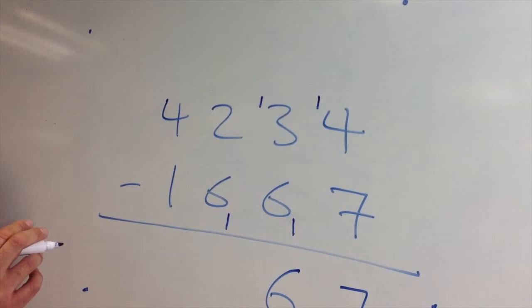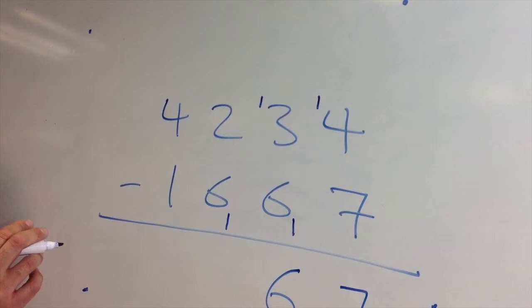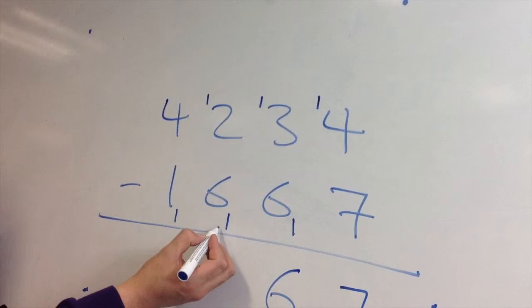And again, we have a similar situation. 2 take away 7 is going to be something you can't do, so you repeat the process. 12 take away 7 now is 5.